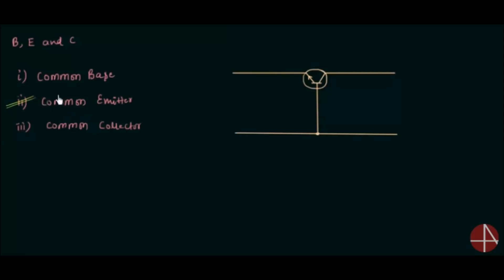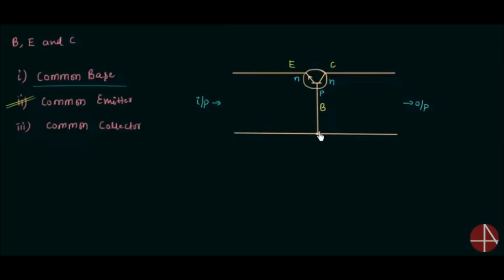In this lecture I will explain common base configuration. In common base configuration, base is common to the input and output circuit. This side is the input side and this side is the output side. You can see the direction of emitter current in the transistor symbol — this is an NPN transistor in which this is emitter, this is collector, and this is base. Base is common to the input circuit and the output circuit and it is grounded in common base configuration.